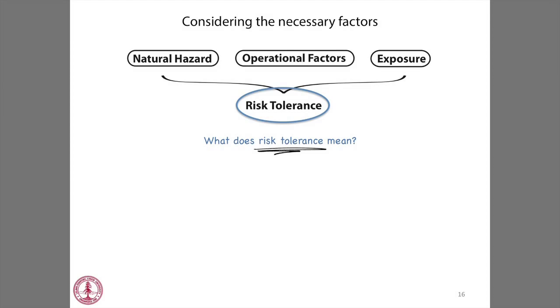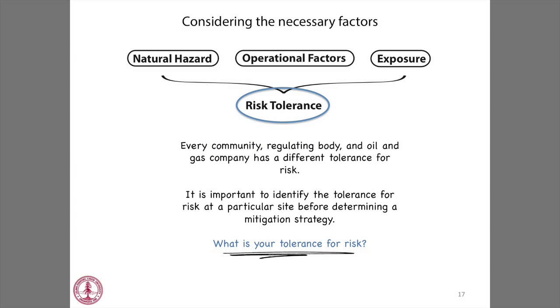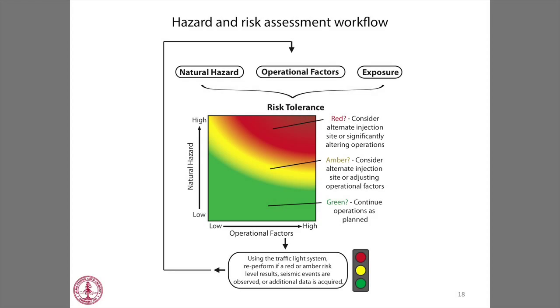Bringing all of these together, we want to think about the tolerance for risk in a particular area. Every community, regulating body, and oil and gas company has a specific tolerance for ground shaking, balanced with the potential economic benefit received from fluid injection. It's important to identify this tolerance before doing a full risk assessment, because it could significantly impact how you choose to operate. Think about your own personal tolerance — how often would you be willing to feel the ground shake if it meant economic benefit in your community?